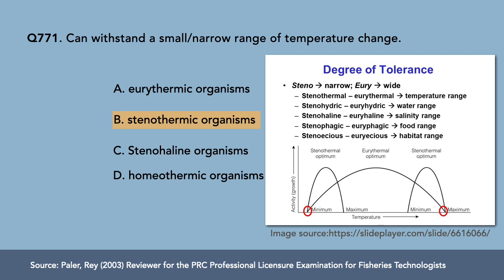We have the prefixes 'steno' and 'eury.' Steno means narrow while eury means wide. This refers to the degree of tolerance of the organism. The question refers to temperature change, so the answer is stenothermic, where 'thermal' refers to temperature.